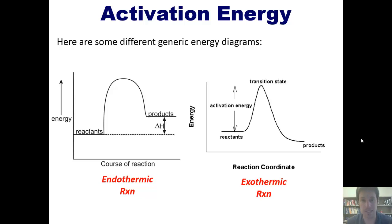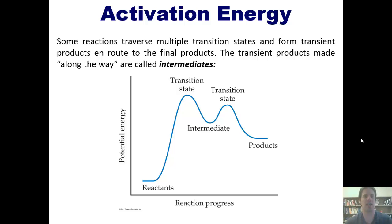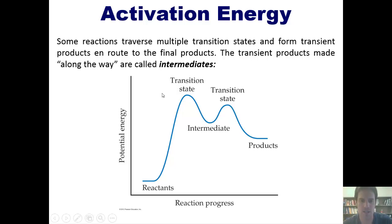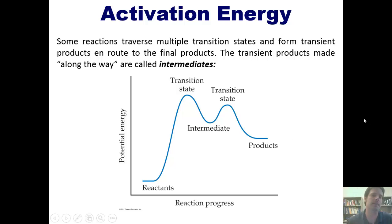Now I'm going to complicate it a little bit. Some reactions traverse multiple transition states and form transient products en route to their final products. The transient products made along the way are called intermediates. Starting with reactants, going up the hill to the peak where the high-energy transition state exists, then going down into a valley — that valley is called an intermediate. The intermediate can sometimes be isolated and analyzed. It can then go up to a second transition state before going down to the final product. Please remember: at the top of the peaks are transition states, while the little valleys in between are called intermediates.